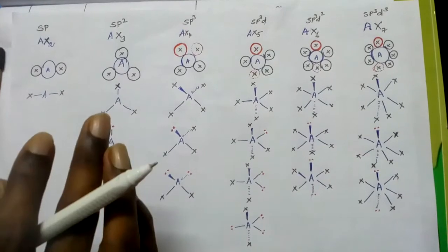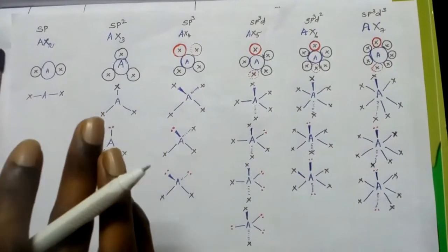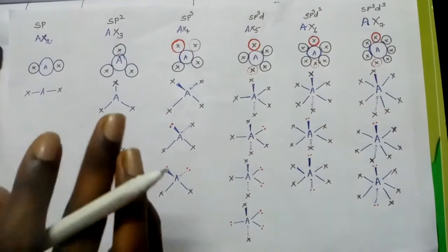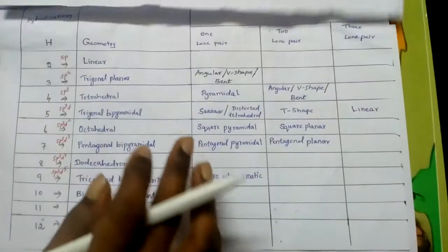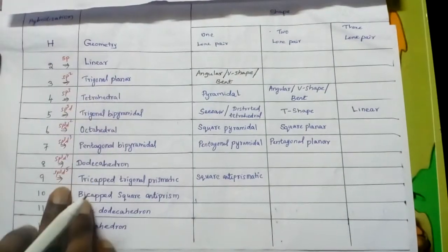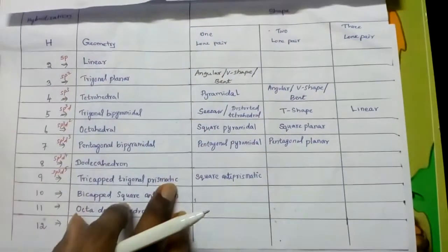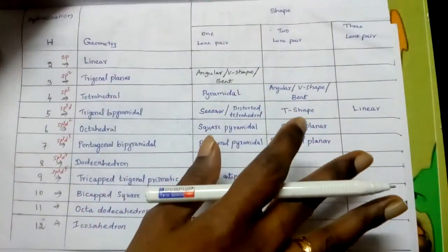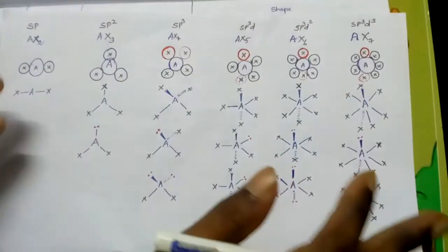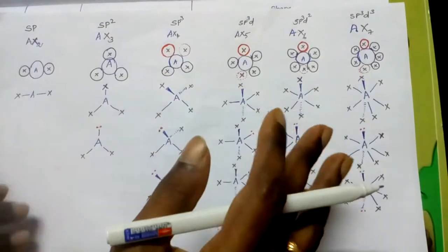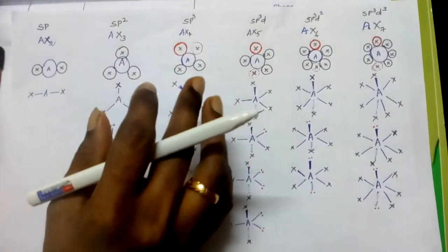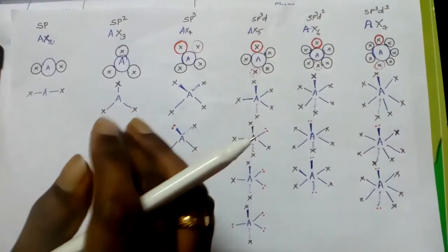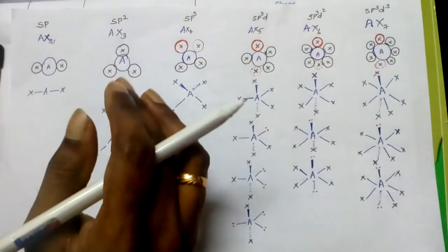Geometry and shape are different. Examiners ask questions to confuse you. Just remember: geometry and shape are different. Geometry is common — if the hybridization is the same, the geometry is common to all. But shape differs based on the lone pairs in the molecule. Based on the 3D structure, we can remember the shape and geometry of the molecules.